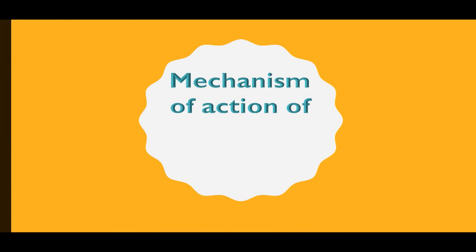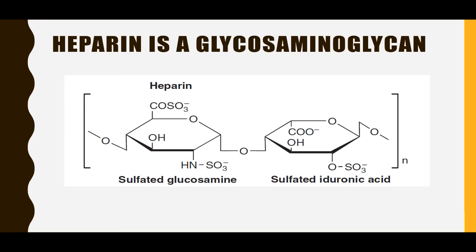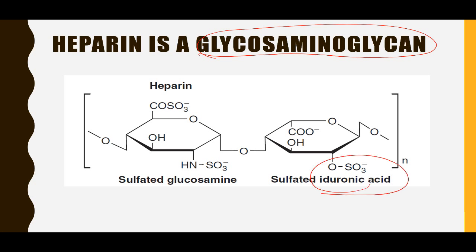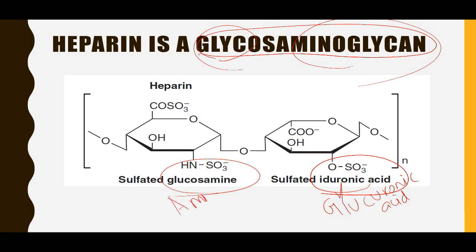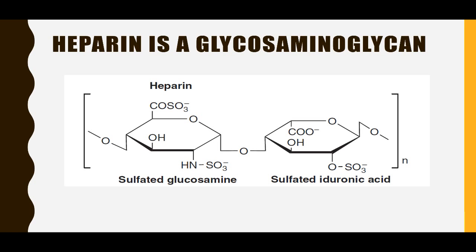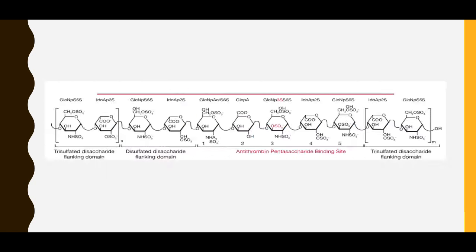In today's live stream we are going to discuss the mechanism of action of heparin. Heparin is a glycosaminoglycan. Glycosaminoglycans are linear unbranched repeats of disaccharides. In heparin, the repeat is made up of iduronic acid and glucosamine — this can be glucuronic acid also, either iduronic acid or glucuronic acid. They are sulfated and acetylated.